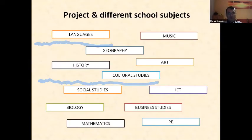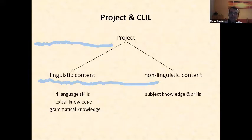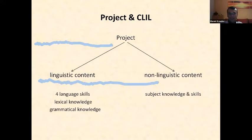Let me now discuss the role this project plays in cross-curricular language learning and teaching. The project Agent corresponds to the CLIL approach because it combines both linguistic and non-linguistic content. The linguistic component requires comprehension and production of language in its written and spoken forms, allowing students to develop four language skills as well as lexical and grammatical knowledge. The non-linguistic component helps them master competences specific to a particular subject and to use tools, materials, and forms of work characteristic of that subject.